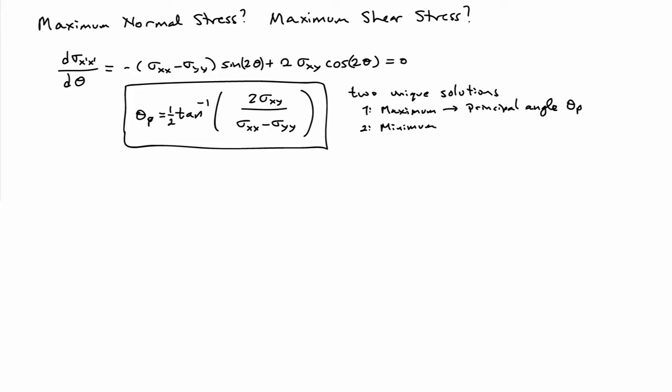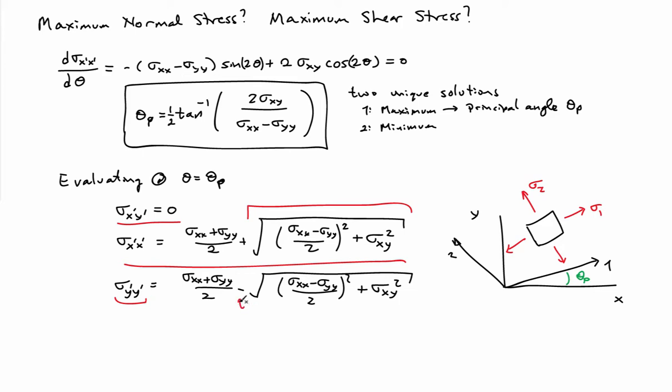We can take this expression and plug it back into the expressions for sigma_x'x', sigma_y'y', and sigma_x'y' to evaluate all the stresses in the principal coordinate frame. If we do that, we find that the shear stress is always 0 in the principal coordinate frame — that's one way to decide whether your axes are already in the principal orientation. The normal stress in the x' direction, the maximum term, is the average of sigma_x and sigma_y plus the radical. The normal stress in the y' direction is the minimum: the same mean stress minus that same radical.